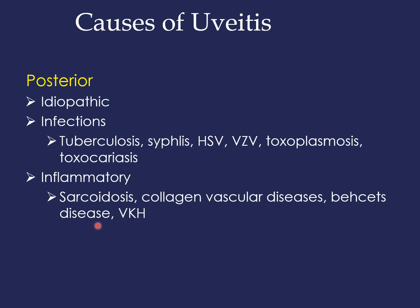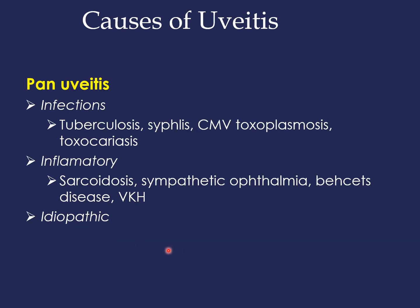Inflammatory causes of posterior uveitis include sarcoidosis, collagen vascular diseases such as SLE, rheumatoid arthritis, and polyarteritis nodosa, as well as Behcet's disease and Vogt-Koyanagi-Harada (VKH) syndrome. Panuveitis can be idiopathic or associated with infections such as tuberculosis, syphilis, cytomegalovirus retinitis, toxoplasmosis, and toxocariasis, and with inflammatory conditions including sarcoidosis, sympathetic ophthalmia, Behcet's disease, and VKH.